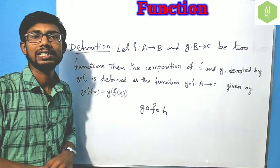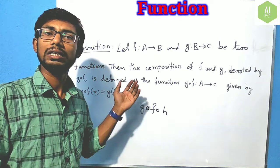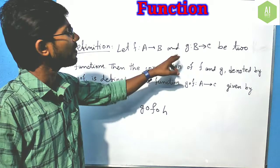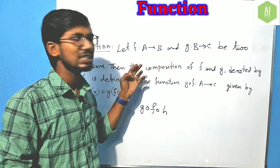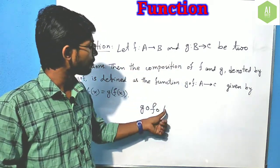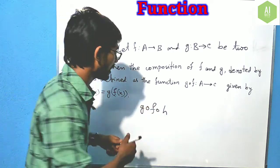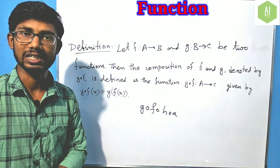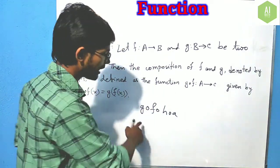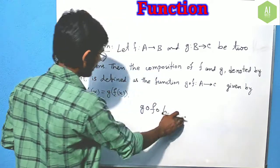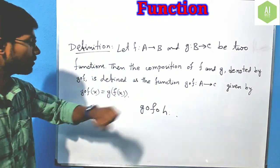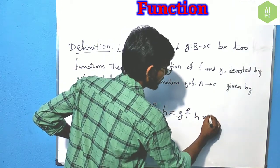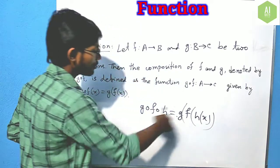So first you have to find f(x), then you have to find g of f(x). Now, if there are three functions, then we write g compose f compose h. If we write g compose f compose h, this means g of f of h of x. This is the composition of three functions.